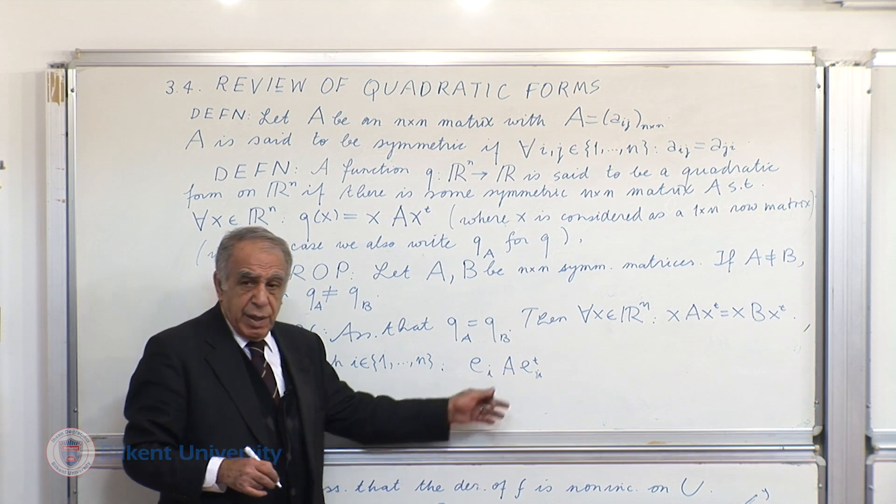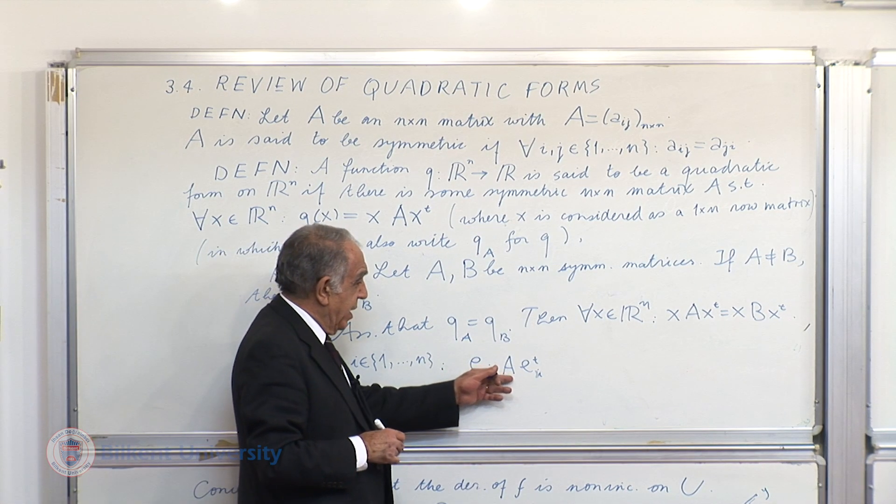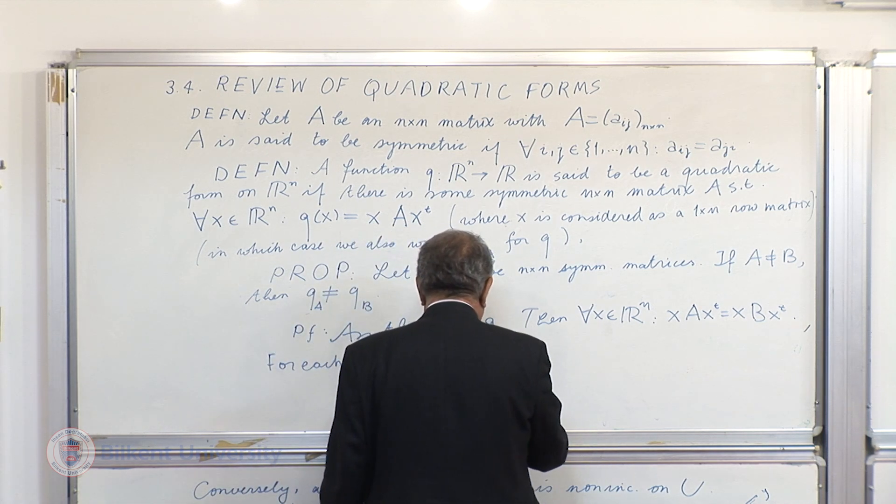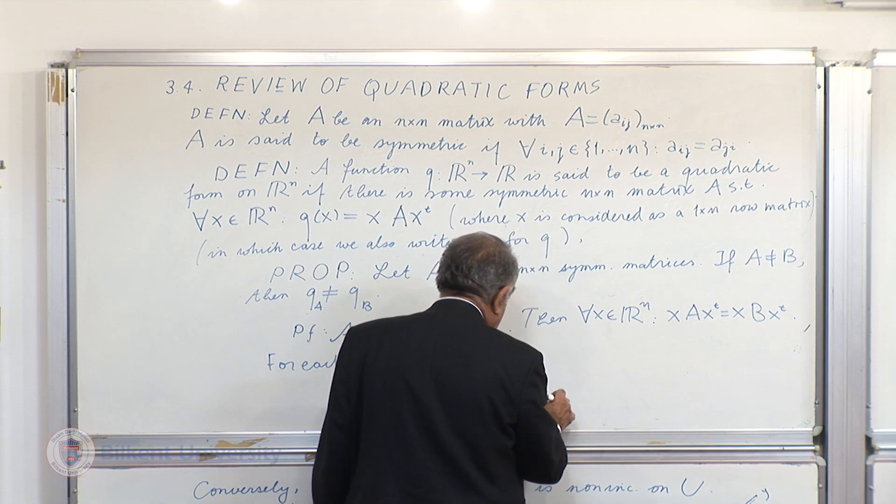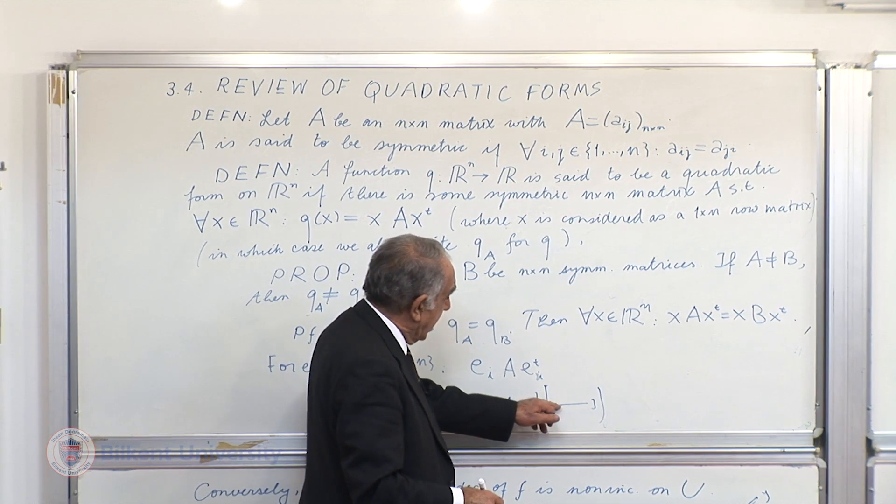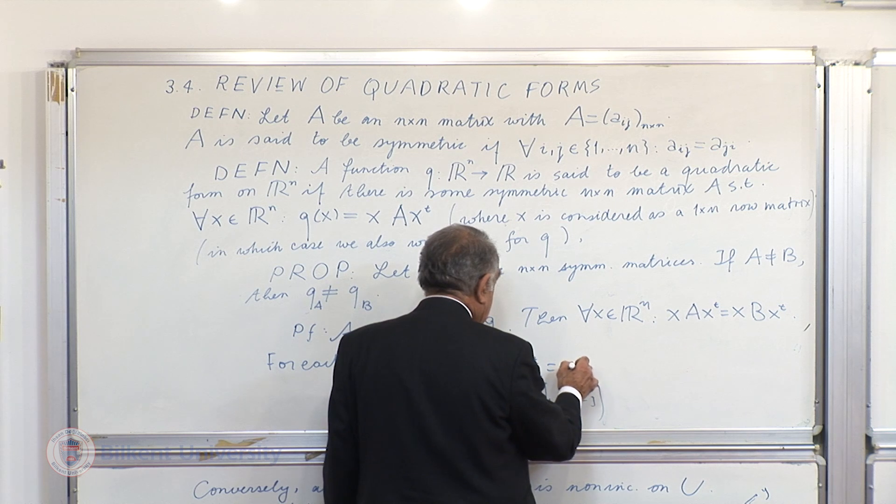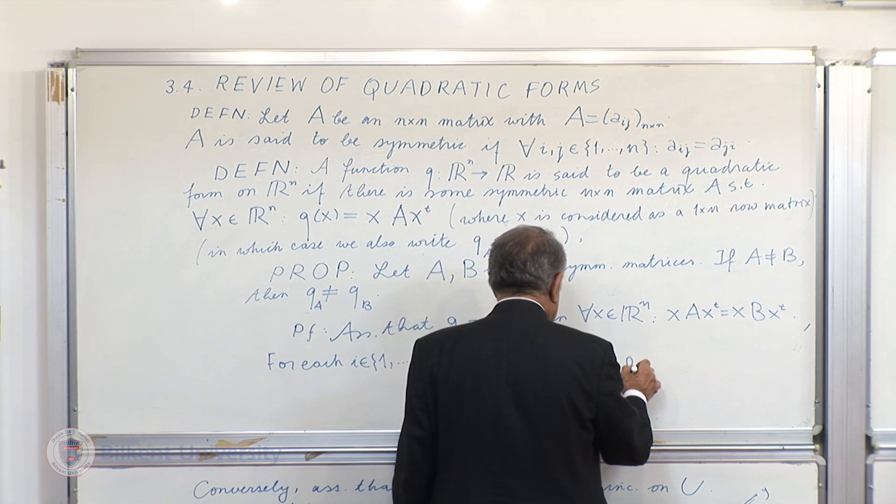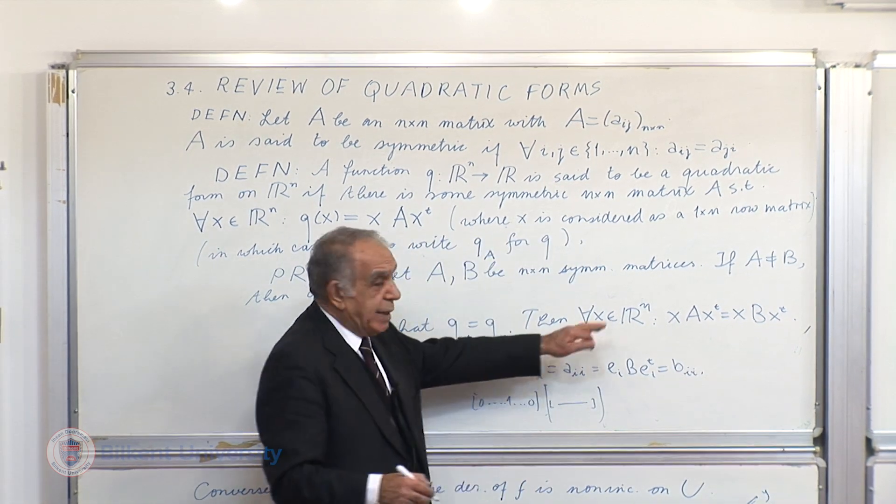You take here the row matrix whose i-th entry is 1, the rest is 0. If you multiply this with this, you get a row matrix again. But this time, you will have just the sum of the - well, let me write this here. 1, 0 as a whole. So, you'll get just the i-th row of this. If you multiply it with A, this multiplied with this, it'll yield this, the i-th row. So, you'll get the i-th row. That will be multiplied e_i transpose. You will get just A_ii. But this will be equal to e sub i, B, e sub i transpose. And that will be B_ii. So, for all i in n, the diagonals are the same.